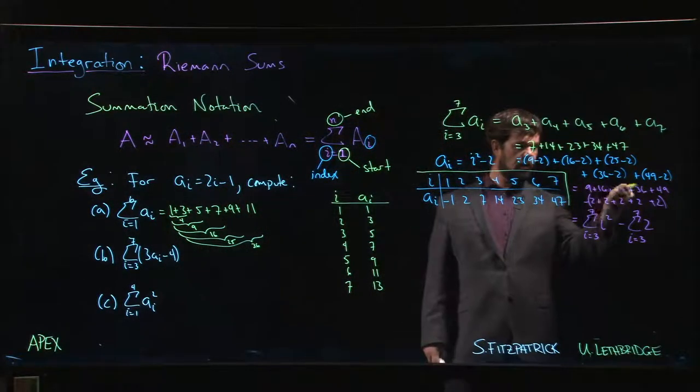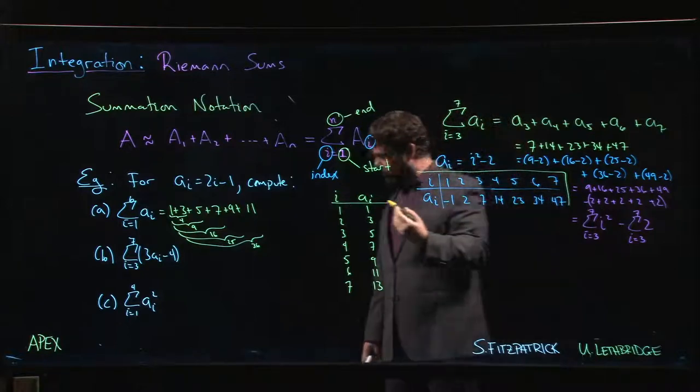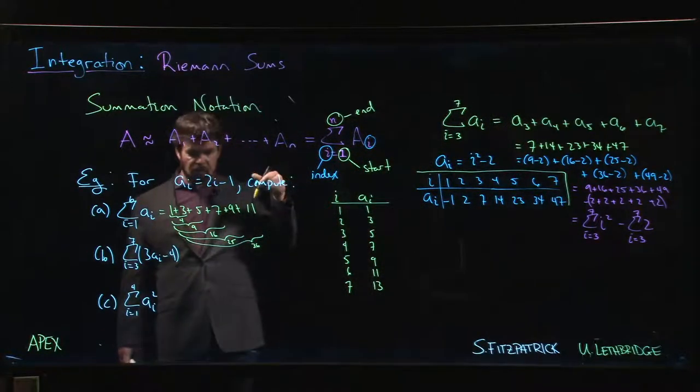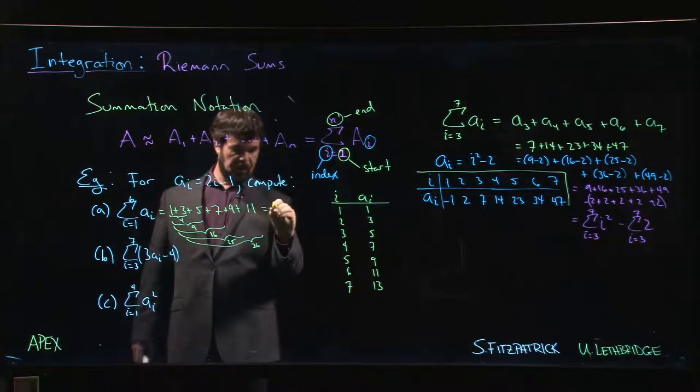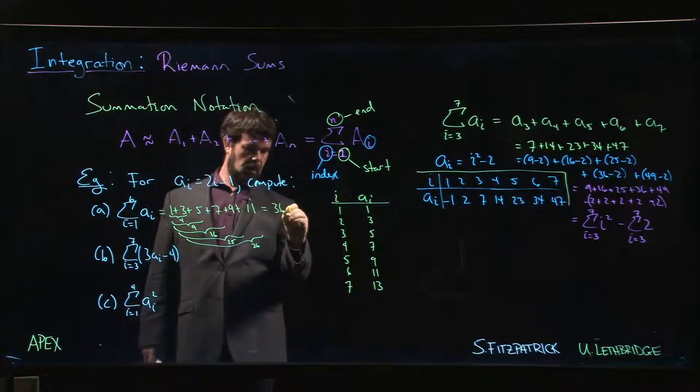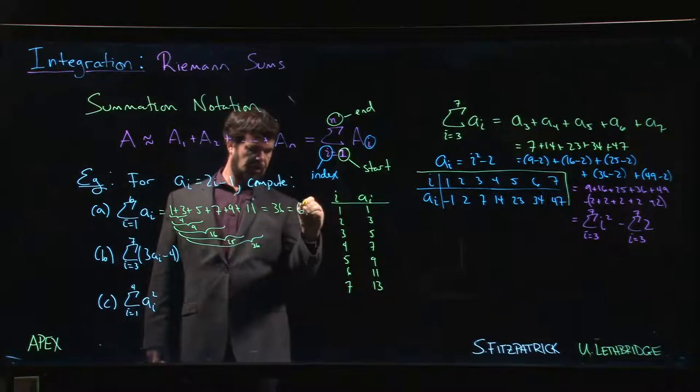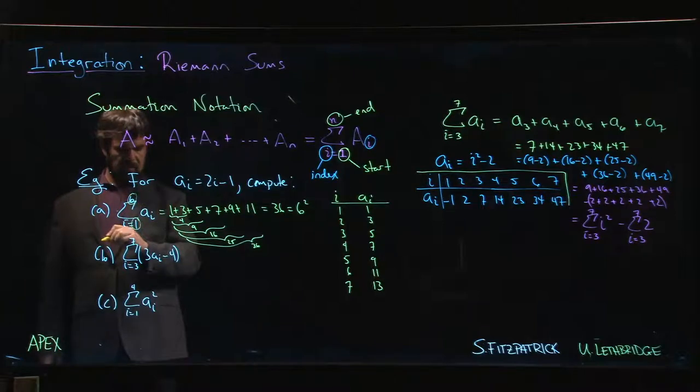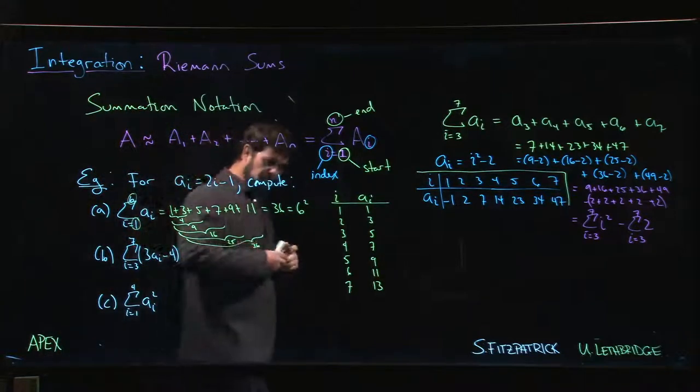Oh, we saw those in the previous example, or at least some of them. Nine, sixteen, twenty-five—this is just squares, they're the perfect squares. So one of the things you might realize here is this goes up to thirty-six, which happens to be six squared.